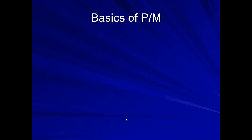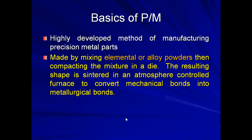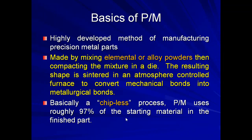Some basics of the powder metallurgy process: this is a highly developed method of manufacturing precision metal parts. Elemental or alloy powders are mixed and then compacted in a die. The resulting shape is sintered in an atmosphere-controlled furnace to convert mechanical bonds into metallurgical bonds. This process is also called a near-net-shape process, in which around 97% of the starting material is used as finished parts, and it is also called a chipless process.